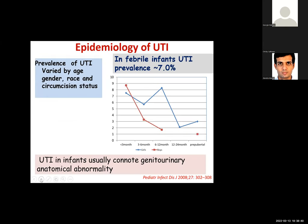Epidemiologically, UTI is one of the most common bacterial infections in childhood. Its prevalence varies by age, gender, race, and circumcision status. Initially, during three to six months of age, it is more common in boys than girls, but as age increases, girls tend to have more UTI. In febrile infants presenting to the emergency room, almost seven percent have an underlying cause of fever that is urinary tract infection.